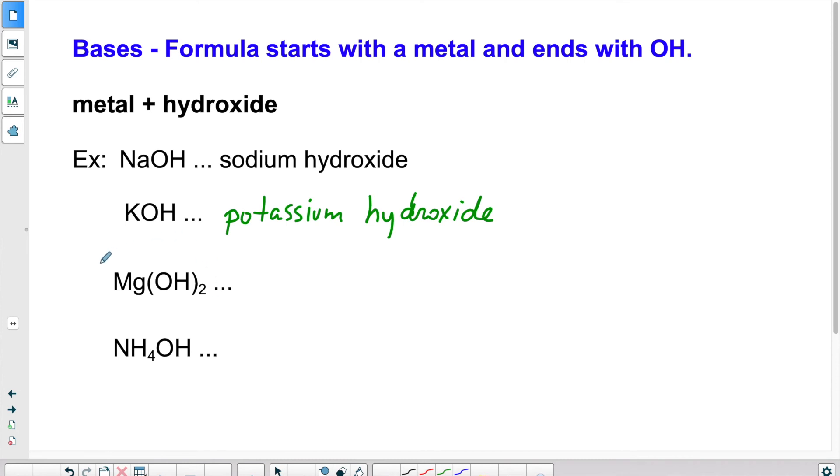Mg(OH)2. Again, these are all ionics, so we don't use prefixes. The metal is magnesium and OH is again hydroxide. Because we don't use prefixes, we don't need to pay attention to this over here.